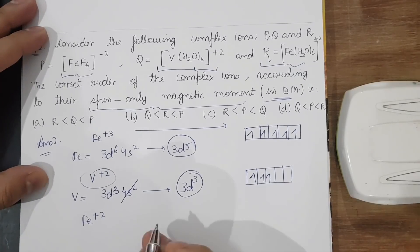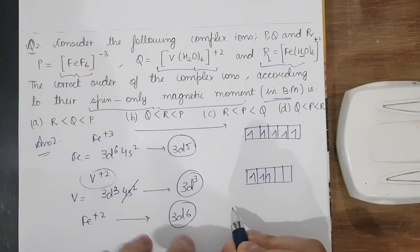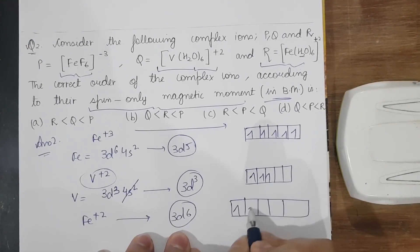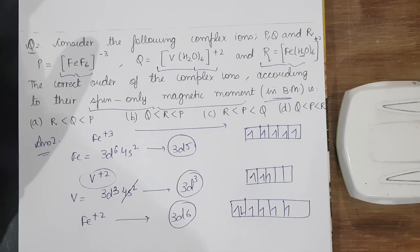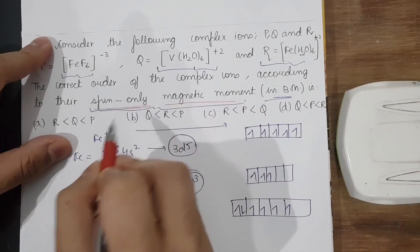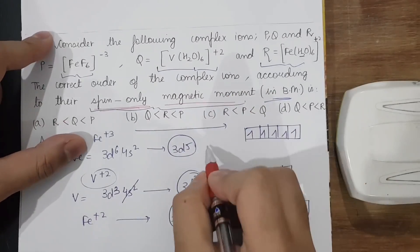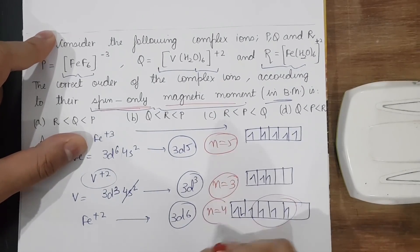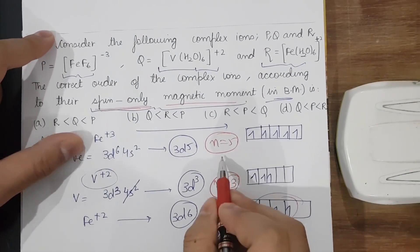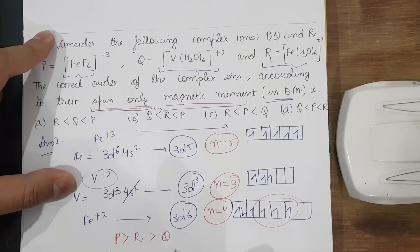For 3d⁶ (Fe²⁺), we have 4 unpaired electrons. So n = 5 for P, n = 3 for Q, and n = 4 for R. The maximum magnetic moment belongs to P, then R, then Q. Therefore the correct order is P > R > Q, which is option B.